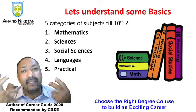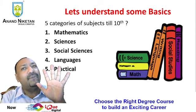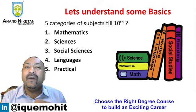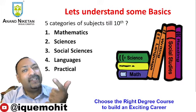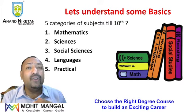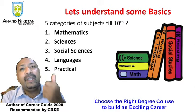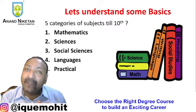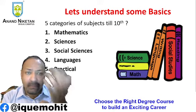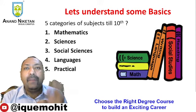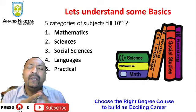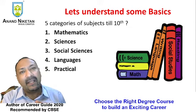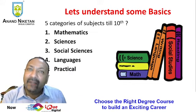In any country, any board, children up to class 10 are exposed to primarily 5 categories of subjects. First is mathematics. Second is sciences — which includes physics, chemistry, and biology. Third is social sciences — history, geography, economics, and civics. Fourth is languages — English, Hindi, Sanskrit, Gujarati, and regional languages. Fifth is practical skill-based subjects — art and craft, drawing, carpentry, physical education, computers, and computer languages.